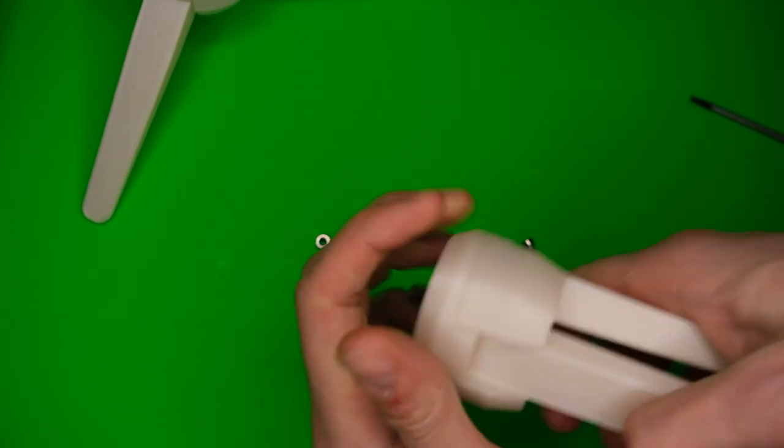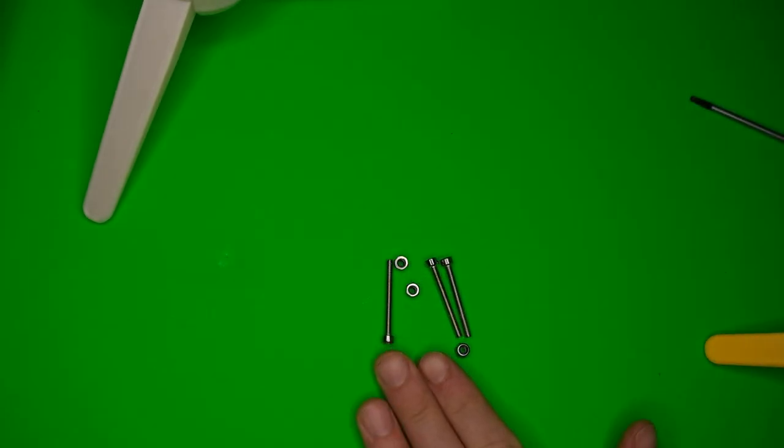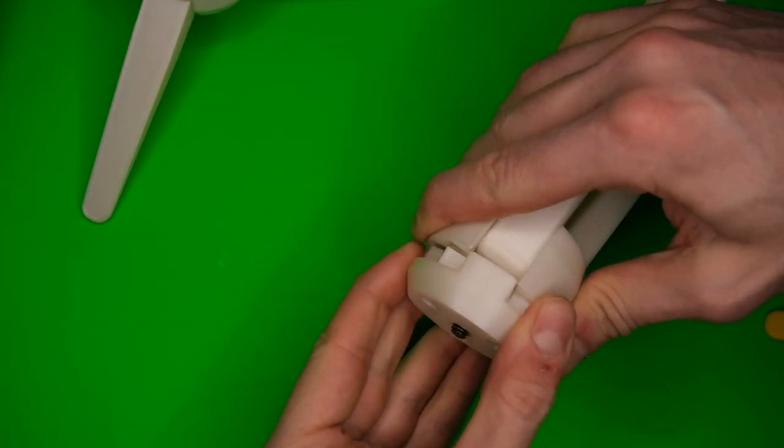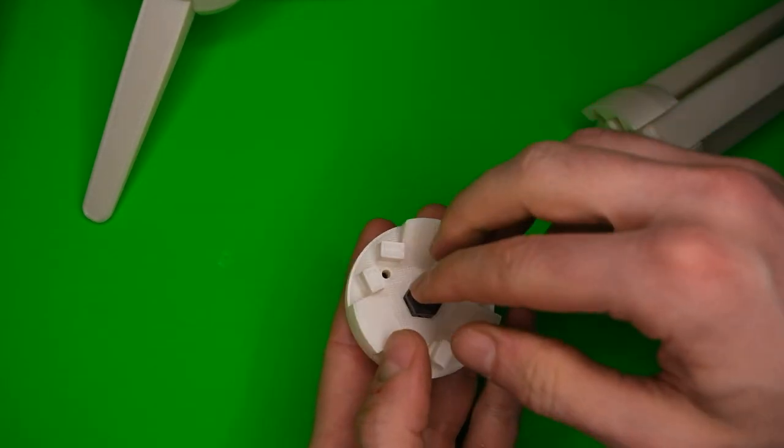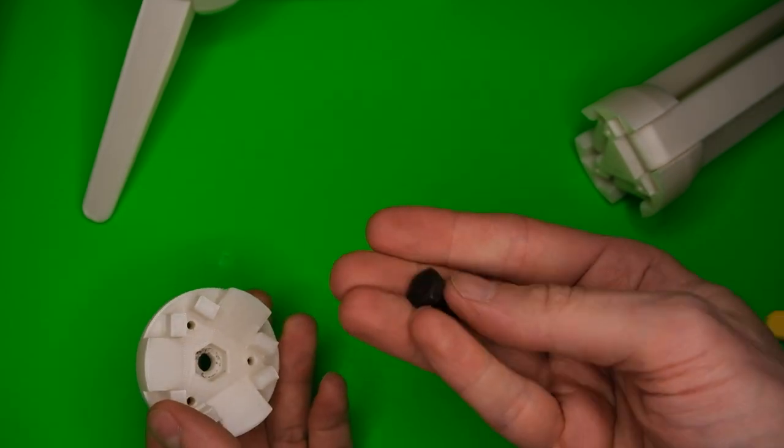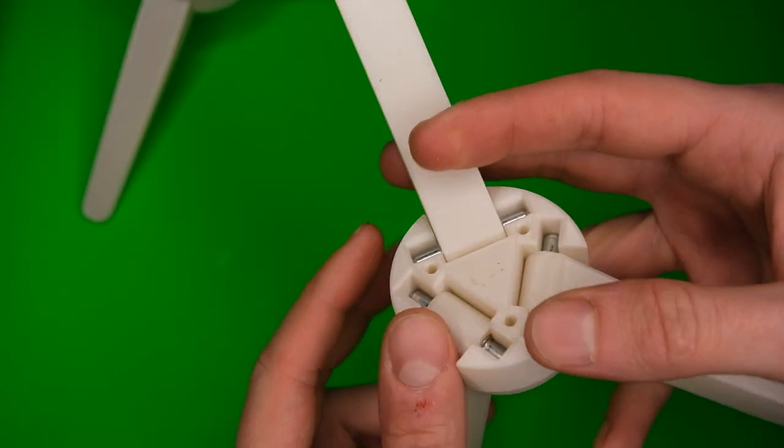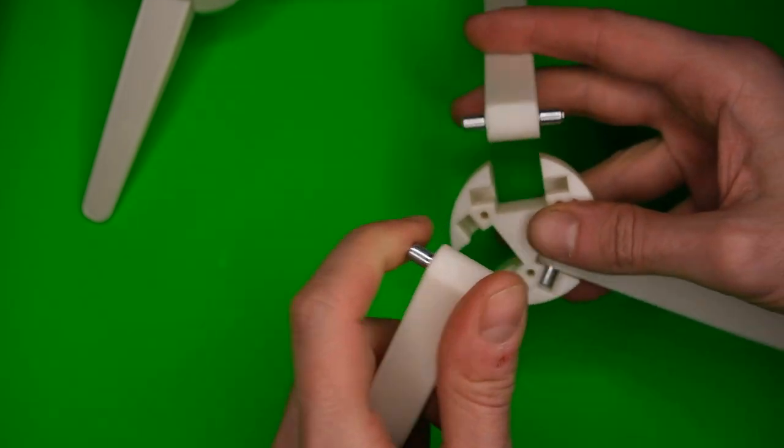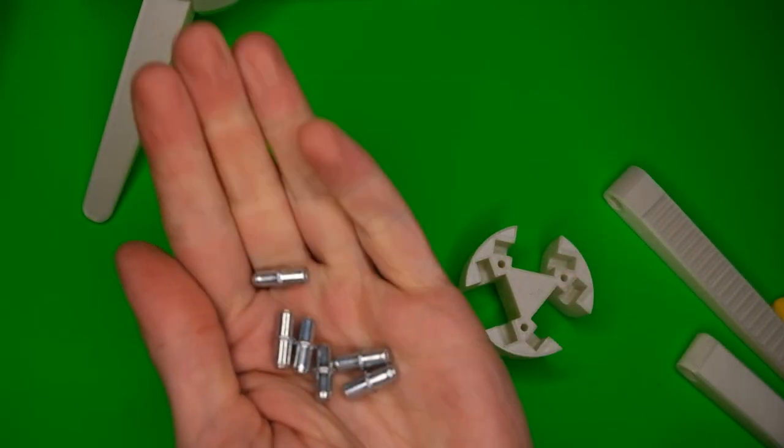In this project I've used 3 M3 x 30mm socket machine screws with the same number of nylon nuts, a single ¼ inch x ½ inch tripod mount hex bolt, and my current favourite vitamins, cupboard shelf pins of which I used 6.